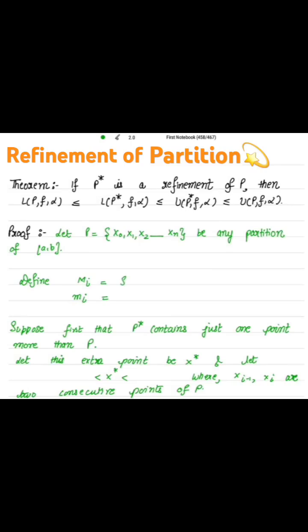Define Mi to be the supremum of f(x) over the closed interval [xi-1, xi], and mi is the infimum of f(x) over [xi-1, xi].